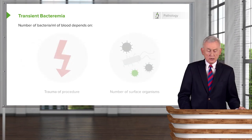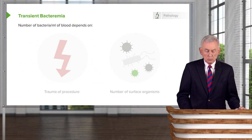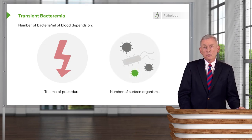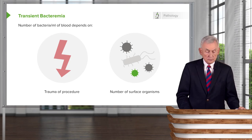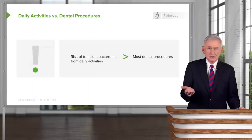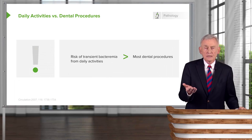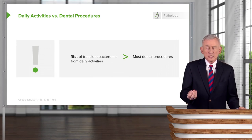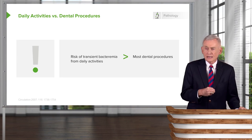The number of bacteria per ml that get into blood depends on the trauma of the procedure and the number of organisms on the surface. One thing discovered in the last 15 years is that the risk of getting bugs in the bloodstream just from daily activities is far greater than that for most dental procedures. If you were to have your teeth cleaned, you would very likely get bugs in the bloodstream. If you have a dental extraction, almost everybody gets bacteria in the bloodstream — but that bacteremia only lasts about 30 minutes.